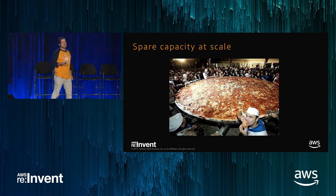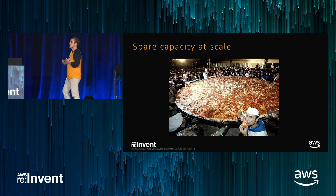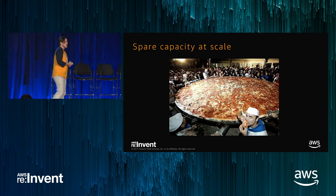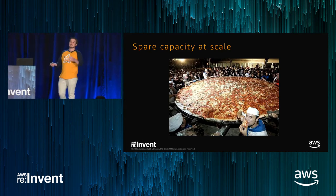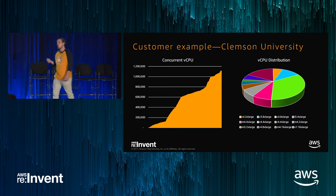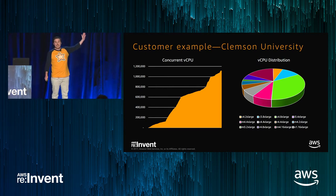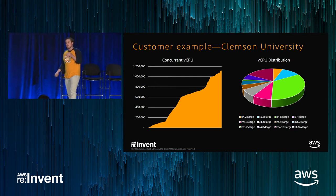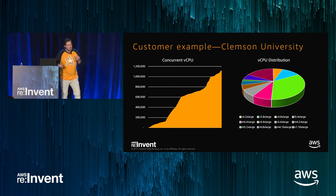Earlier this year, Clemson University came to us. They wanted to run a massive-scale natural language processing grid cluster in the cloud. They needed to get to over half a million vCPUs for this analysis to be worthwhile. They came and asked, 'Do you think we can do it? We might need multiple regions, and we know we'll have to use multiple instance types.' Without asking me, our head of scientific computing said, 'What about a million?' Clemson was able to do it in a single region using Spot Fleet — they got to over 1.1 million vCPUs in the US-East-1 region. We'll talk a lot about this idea of using multiple instance types and how it enables you to achieve tremendous scale, be resilient to failure, and get a really good price.